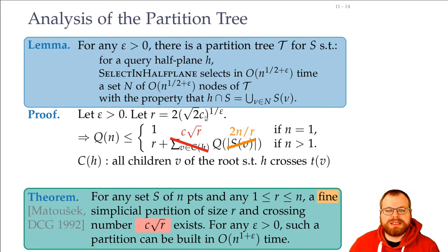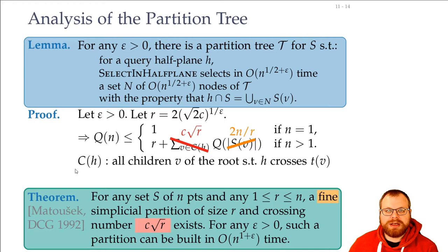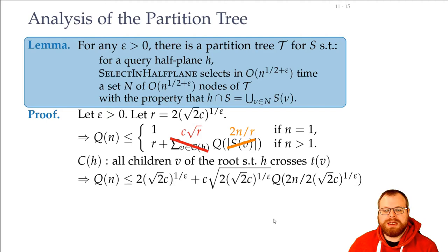Now we want to plug in the value of r and get rid of it, replacing it by the formula we chose. We get the following recurrence — it's quite long. We replace all occurrences of r with the term 2 times square root of 2c to the 1 over epsilon. Don't look at this too closely just yet — we will simplify it now.